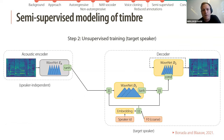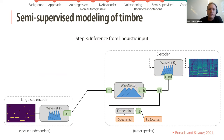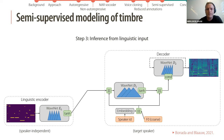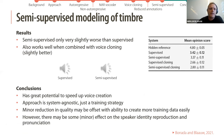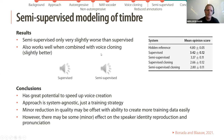The third step is inference from linguistic inputs: at synthesis we take the pre-trained speaker-independent linguistic encoder and the pre-trained decoder for the target speaker. The results show that semi-supervised training is only slightly worse than supervised training, and when combined with voice cloning the results were even slightly better — likely because with small data, annotation errors are very significant and the semi-supervised approach may be more coherent.